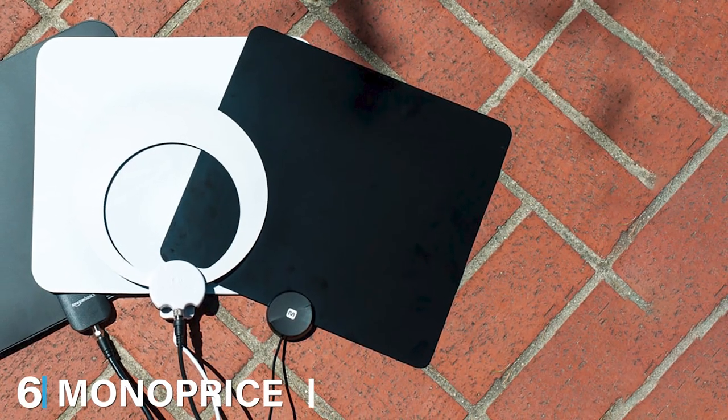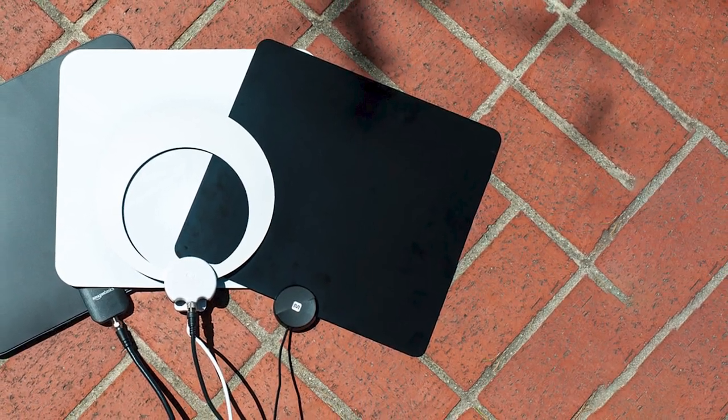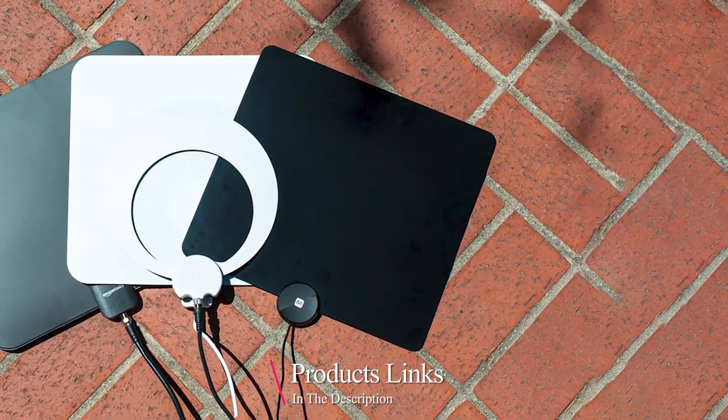The number six position is dominated by Monoprice Active Curved HD5 HD TV Antenna. Monoprice remains one of the best kept secrets for home theater enthusiasts and installers, with reliable and inexpensive antennas, cables, and other A/V equipment.